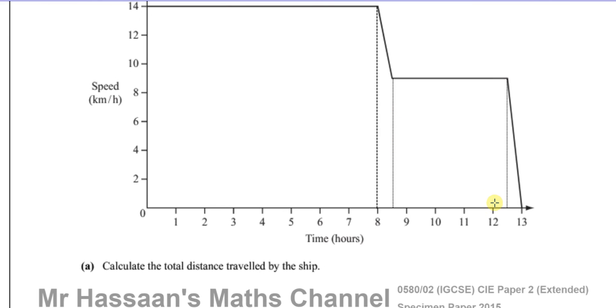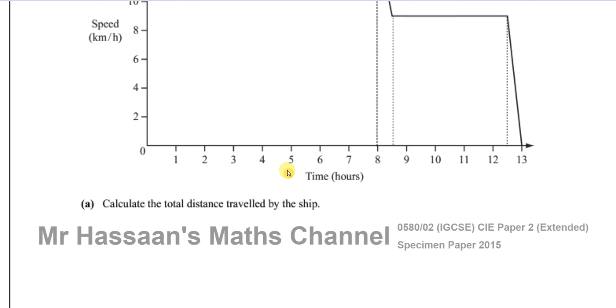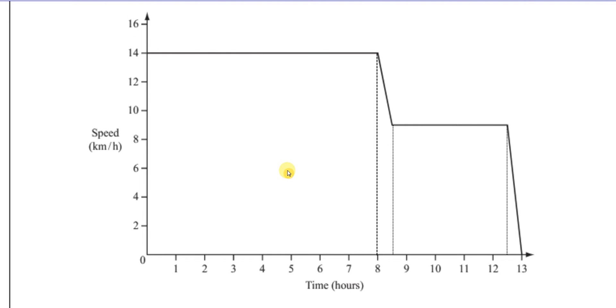Of course, that's going to be 13 hours after it started the journey. Here we have the breakdown of this journey. The question says calculate the total distance traveled by the ship. Now, the total distance in a speed-time graph is given by the area under the graph.